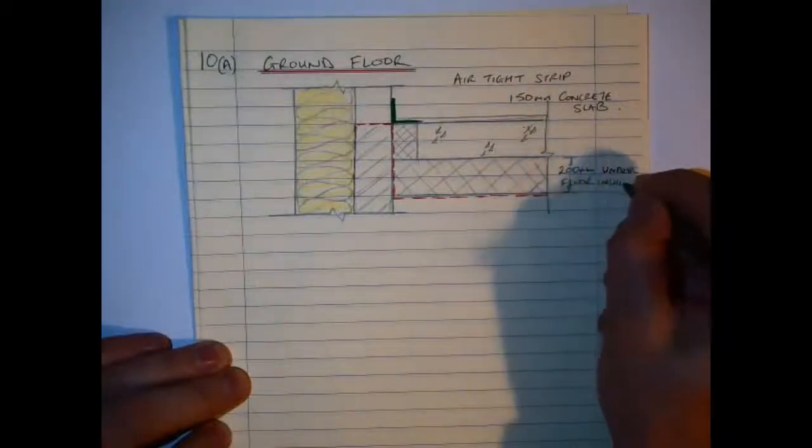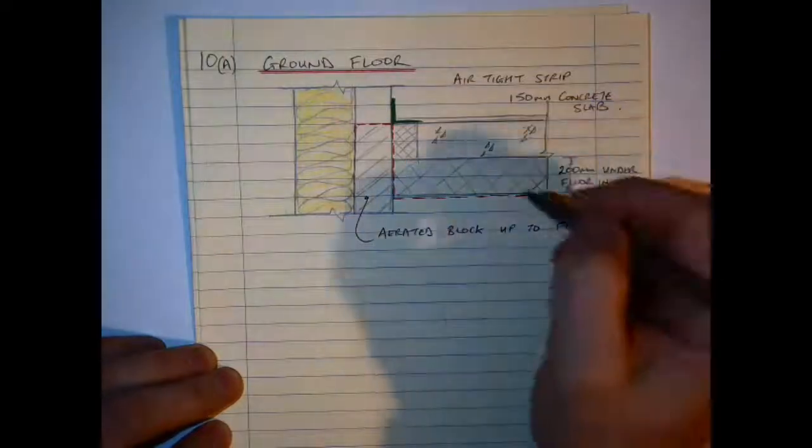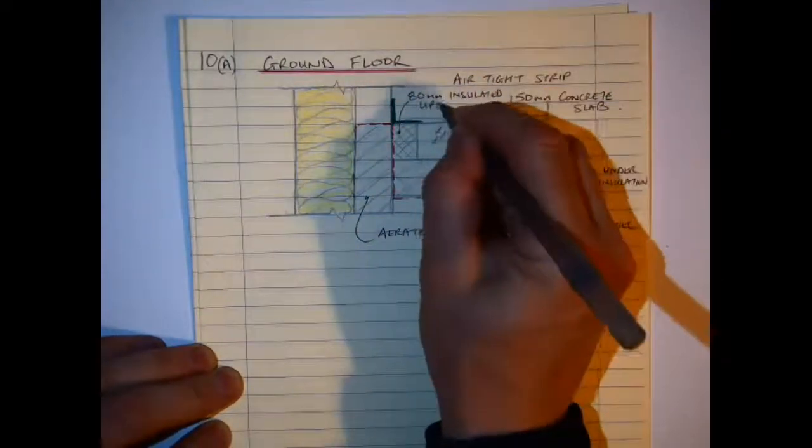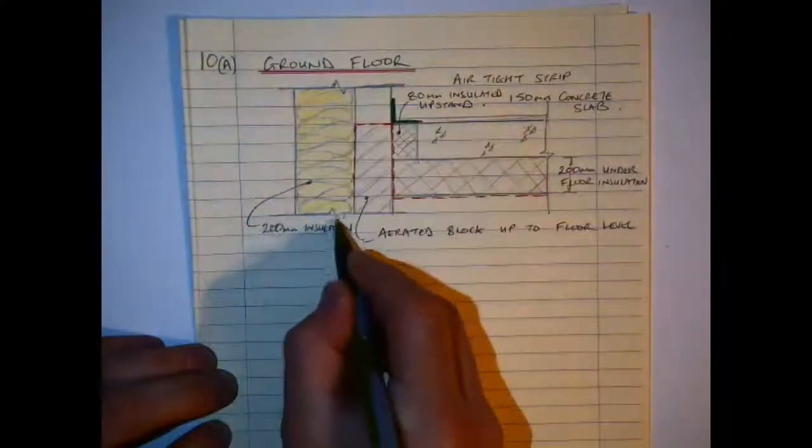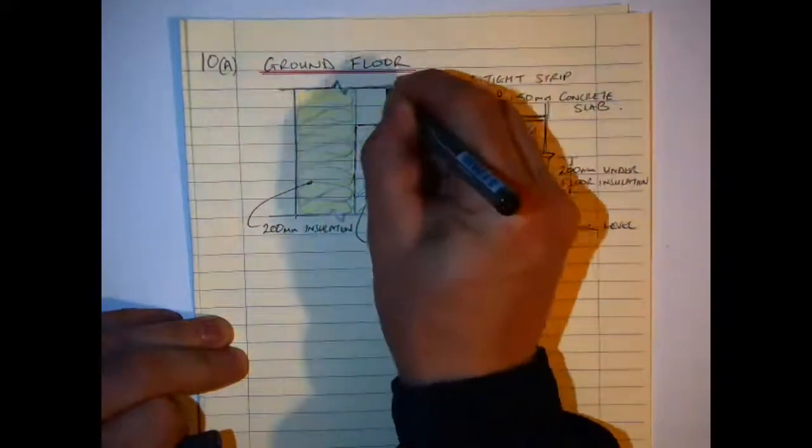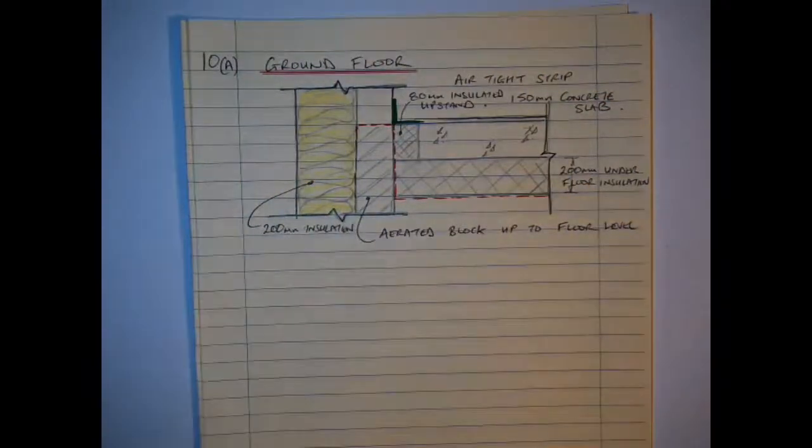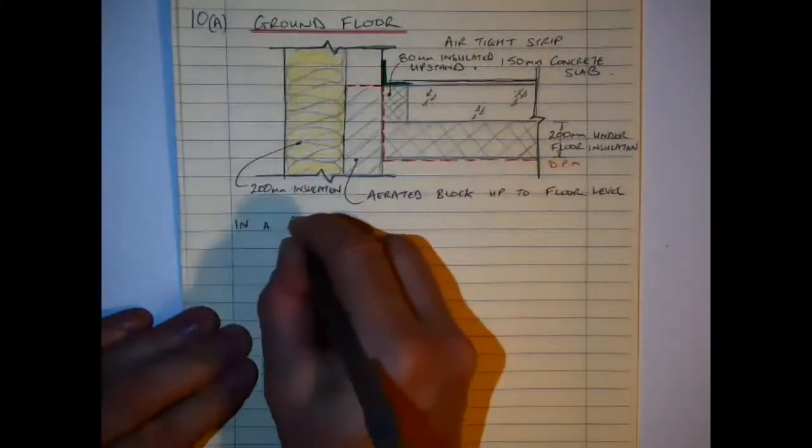My broken line here is showing the DPM. Insulation is in the cavity. I don't really need to go into the external wall. And I am hatching the aerated block which continues up until floor level, reducing the thermal bridge there. The depth of insulation, even though it may not be to scale, I have indicated that it is 200mm, the concrete slab 150, an insulated upstand of 80mm, and 200mm in the cavity. I have my air tightness strip placed in along here and I have just used a couple of colors to make it stand out on the page. And that is basically my sketch.